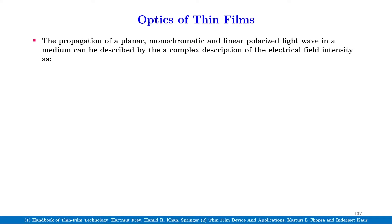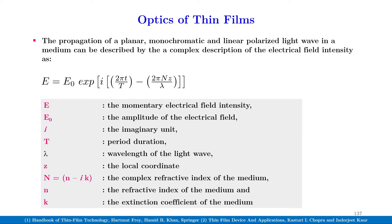We begin with an analysis on the propagation of electromagnetic waves through optical films. The propagation of a planar, monochromatic, and linear polarized light wave in a medium can be described by a complex description of the electric field intensity, where e is the momentary electric field intensity, e0 the amplitude of the electrical field, i the imaginary unit, and t the period duration.